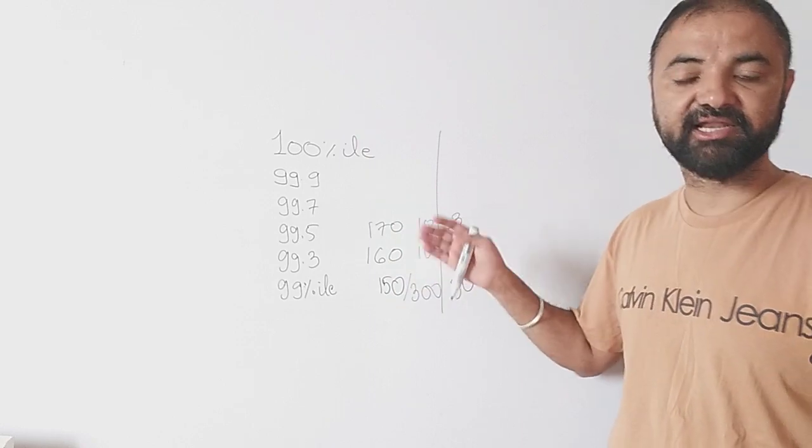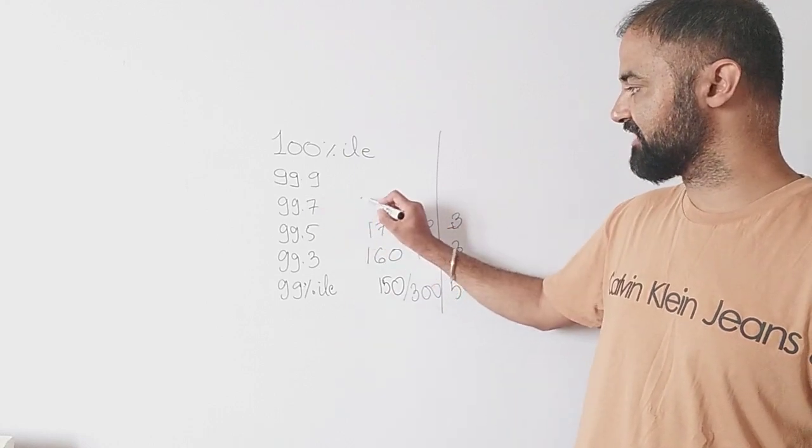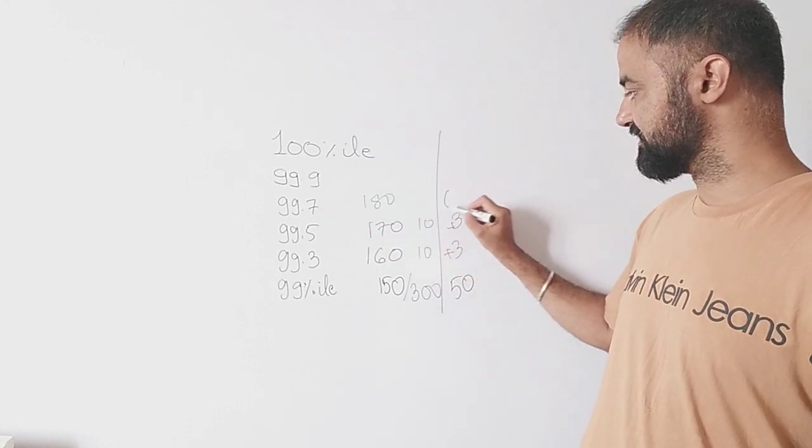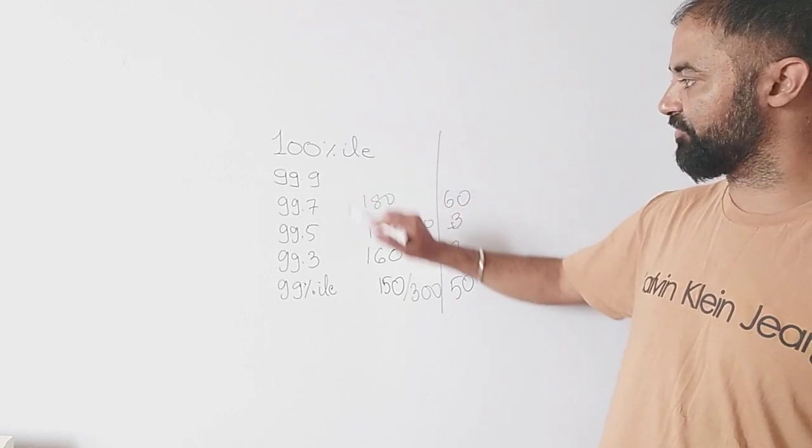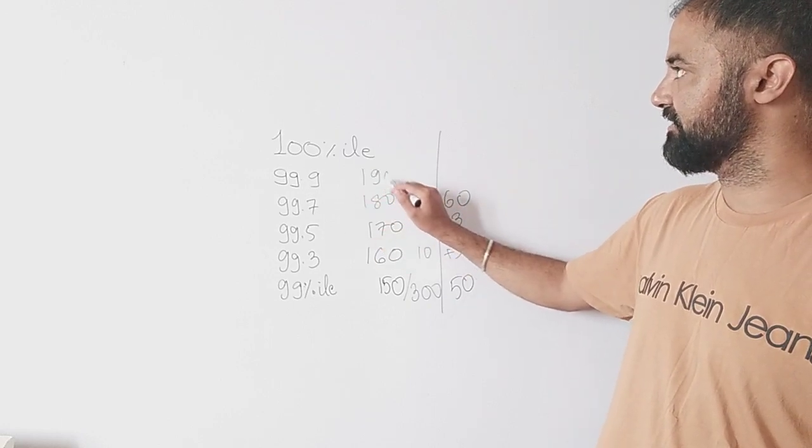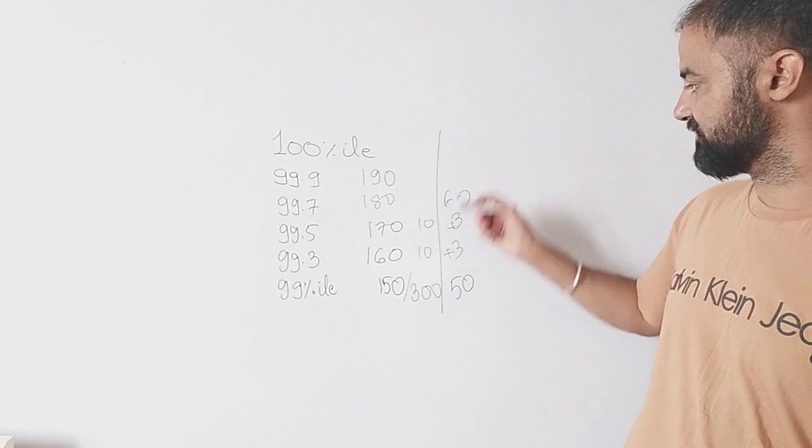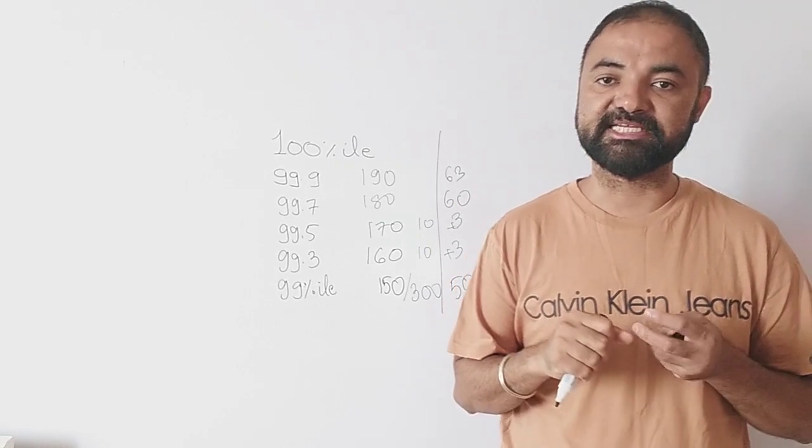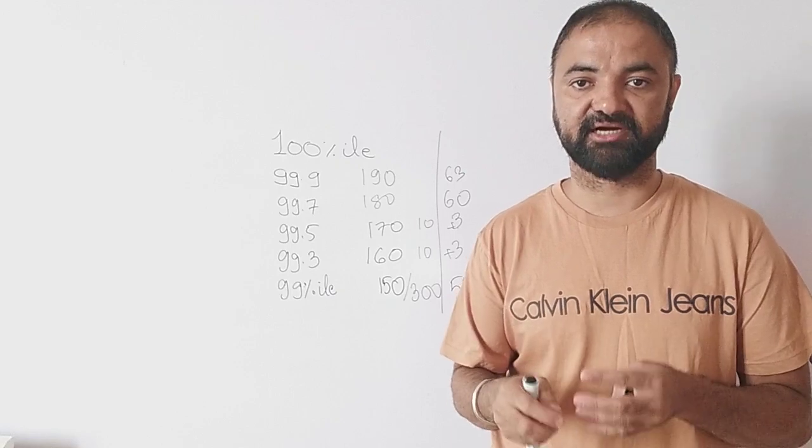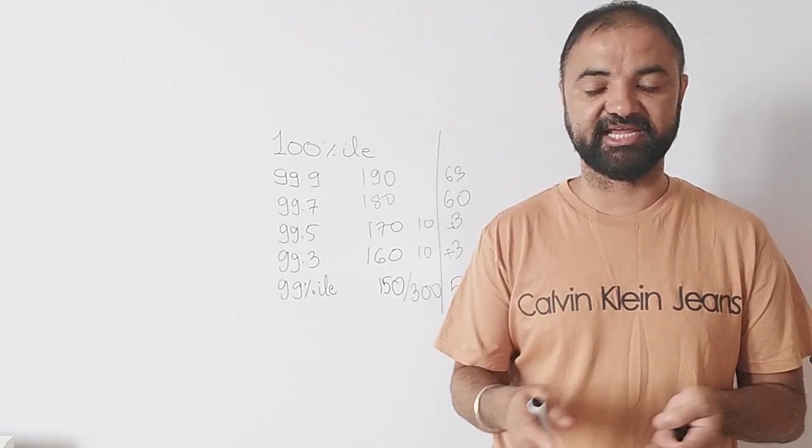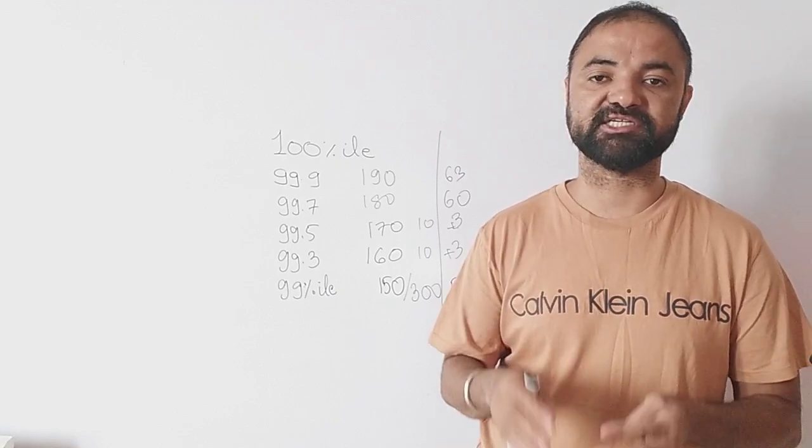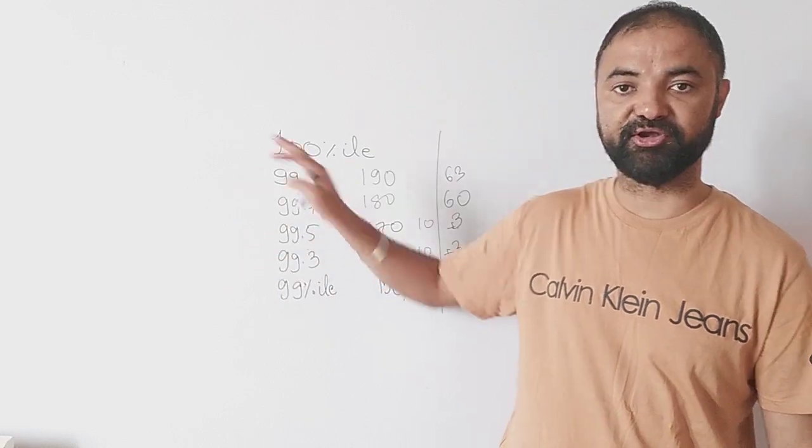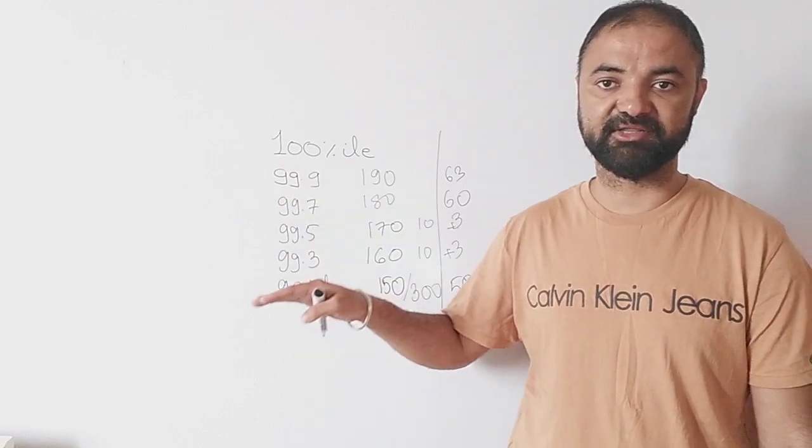99.7 is 180 which is 60 questions correct, and 99.9 is 190, which is approximately 63 questions correct. There's no major jump - 3 questions extra per section, 1 question extra if I can solve, you are increasing your percentile by almost 0.2 percent.